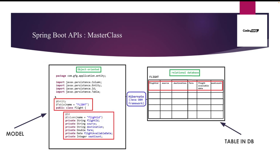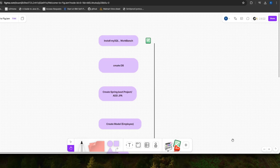Here you can see I've created an object-oriented class — this is generally called a model. I'm annotating it with @Entity, which means it will be a table in the database, and with @Table giving it the name 'Flight'. Using Spring Data JPA and Hibernate, a table with the same name and same columns gets created. All attributes of this class are treated as columns in the database.